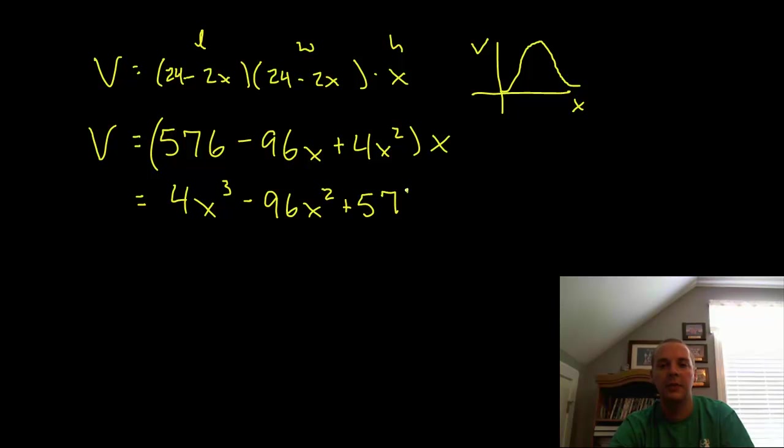Now it's time to take derivatives so we can find the critical points. This will be 12x squared minus 192x plus 576, and we want to set that equal to 0 to find the critical points.